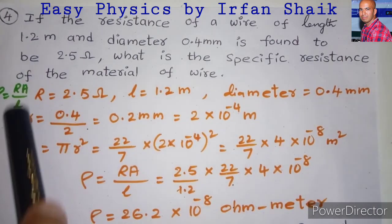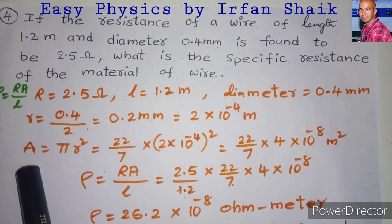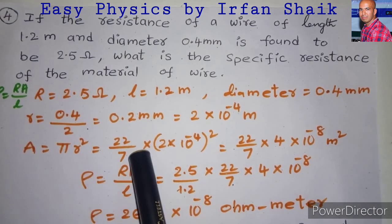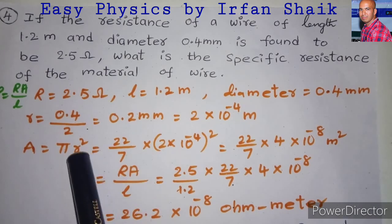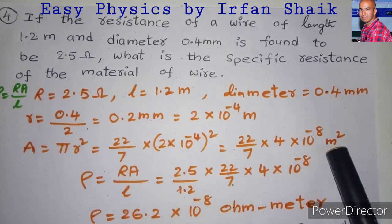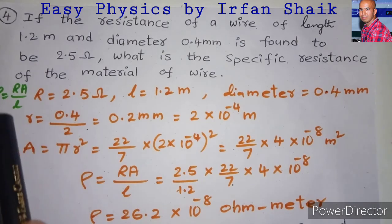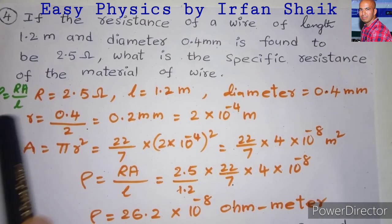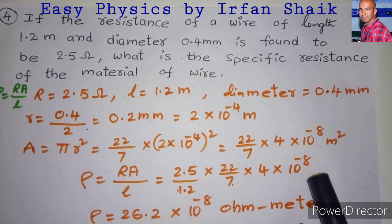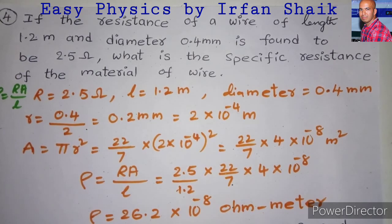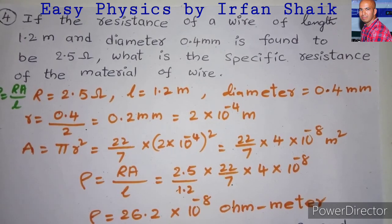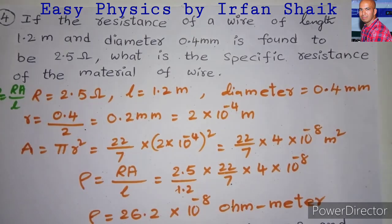Now we need to find the cross-sectional area A. The cross-sectional area of a circle is pi r squared. We know the value of pi as 22 by 7, and the radius is 2 times 10 to the power of minus 4, whole squared. By simplifying, we get the area value. Now we know all three values in the equation. By substituting and simplifying Rho equals R times A divided by L, we get the specific resistance of the material as 26.2 times 10 to the power of minus 8 ohm meters.